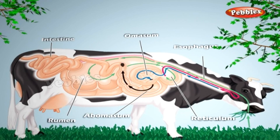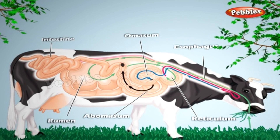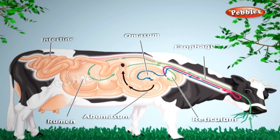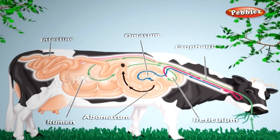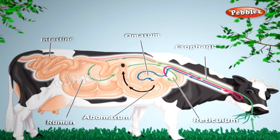The grass is rich in cellulose, a type of carbohydrate. Many animals, including humans, cannot digest cellulose. Ruminants have a large sac-like structure called the cecum between the small intestine and the large intestines. The cellulose of the food is digested by bacteria which are not present in humans.